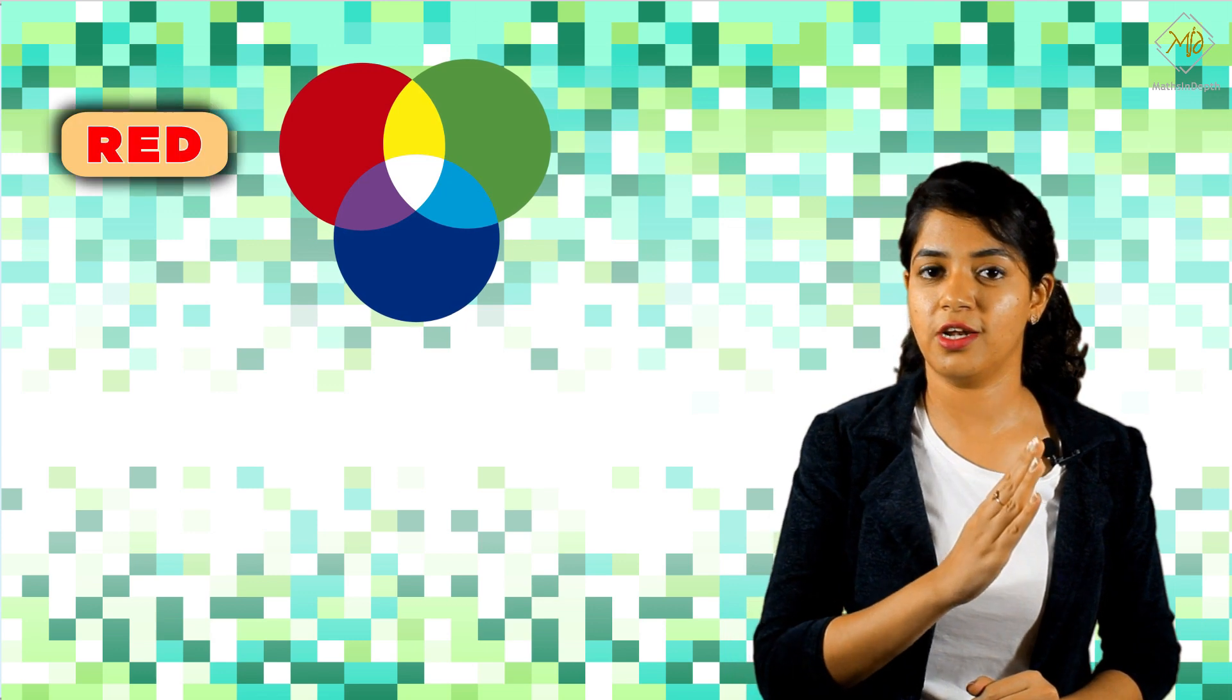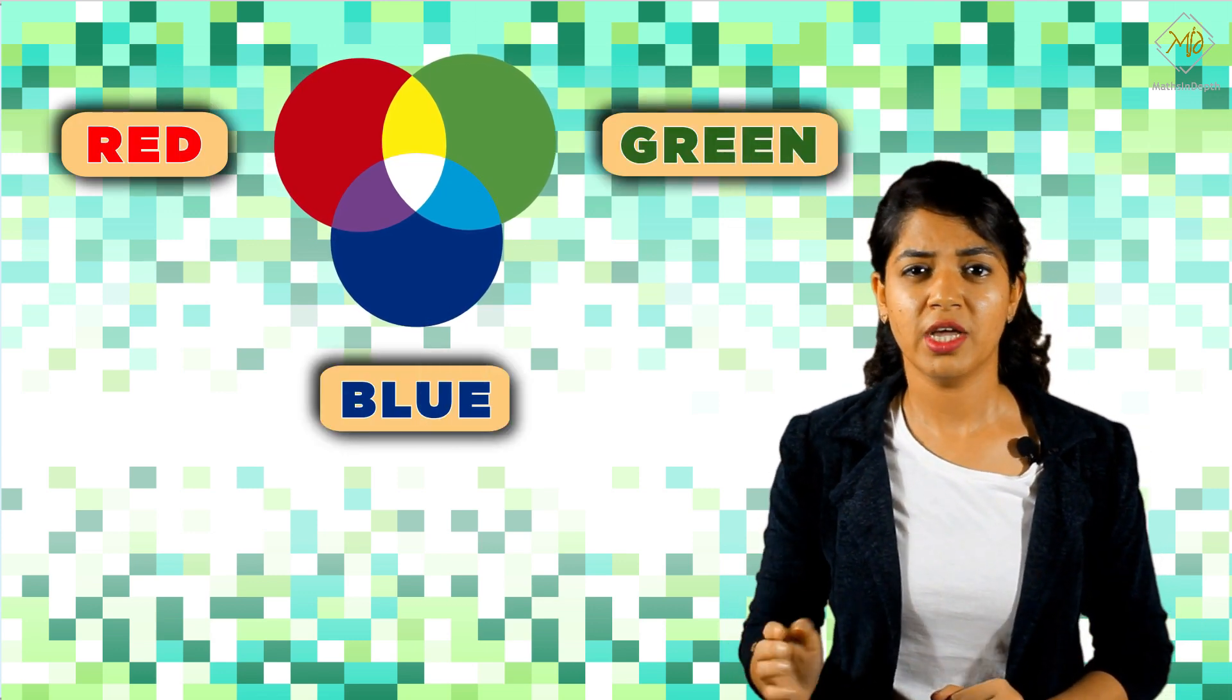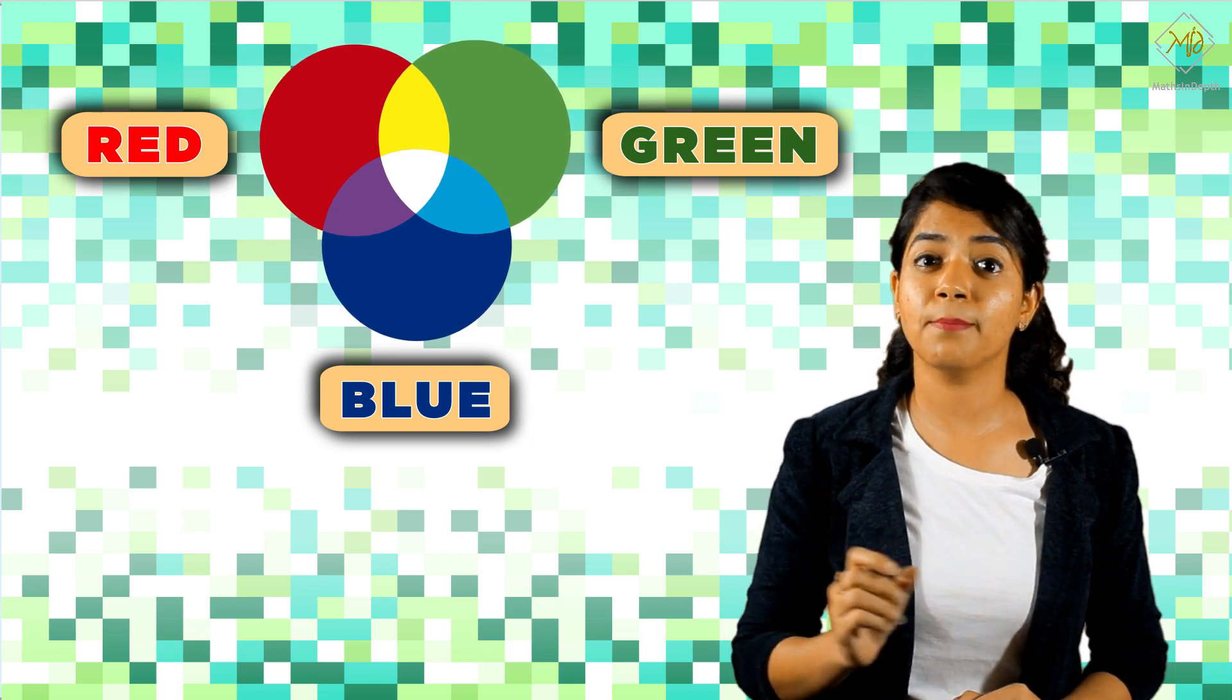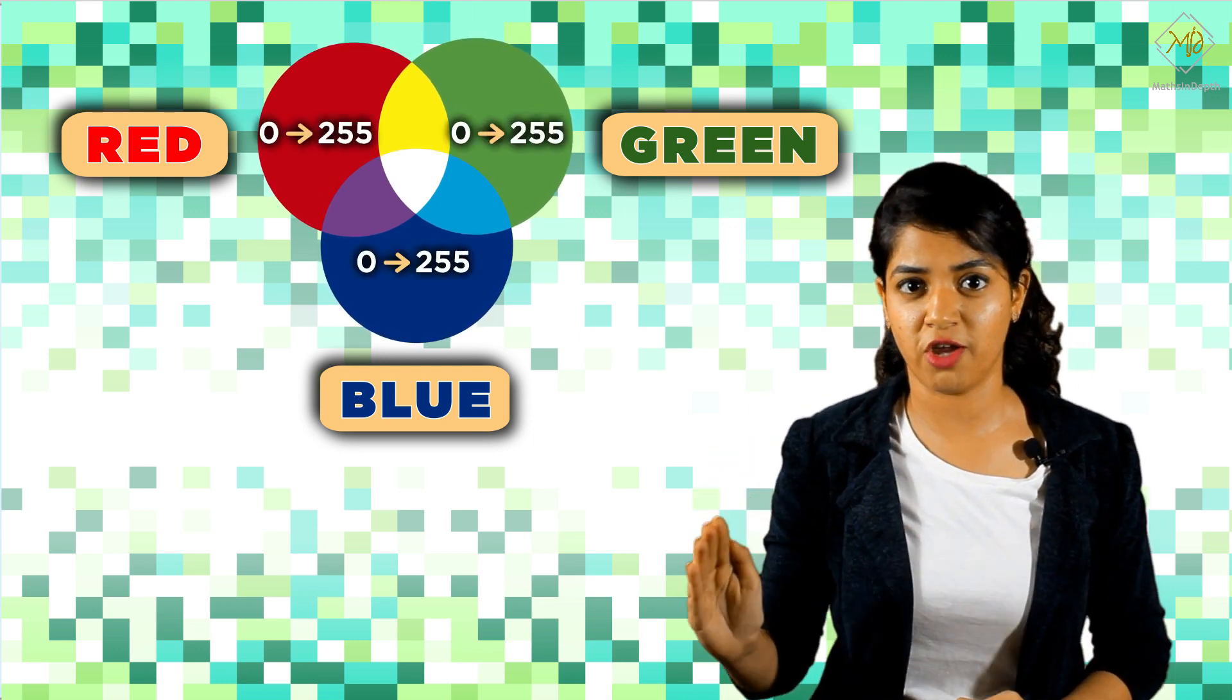Now, let's consider a laptop or desktop screen. When you zoom in, you can see a number of tiny pixels. Each pixel can produce three different colors: red, green, and blue. Each color in this pixel can be represented using numbers zero to 255.